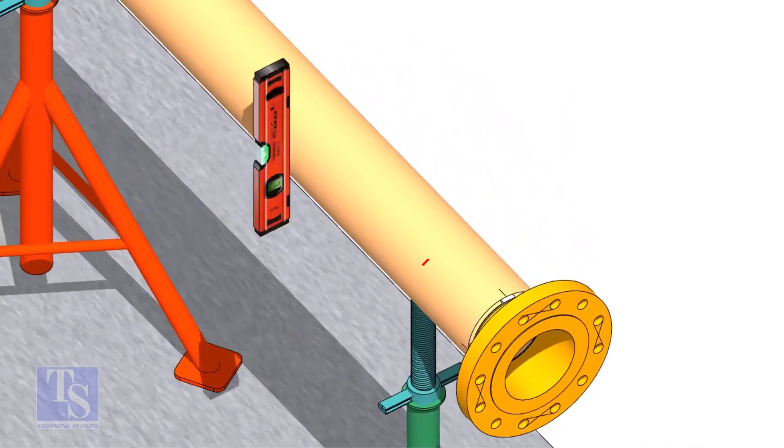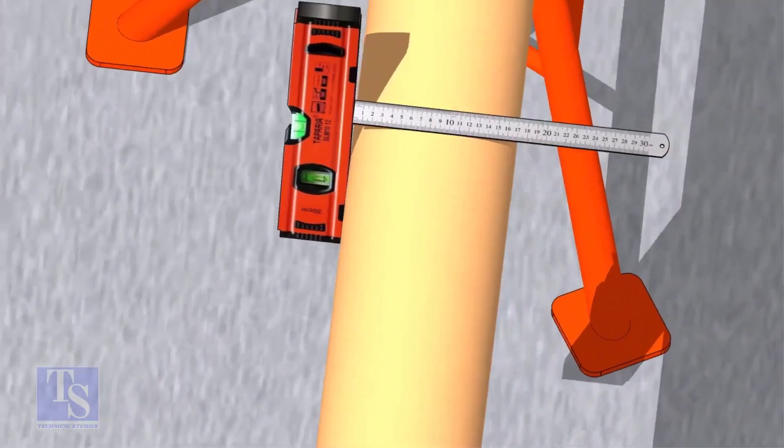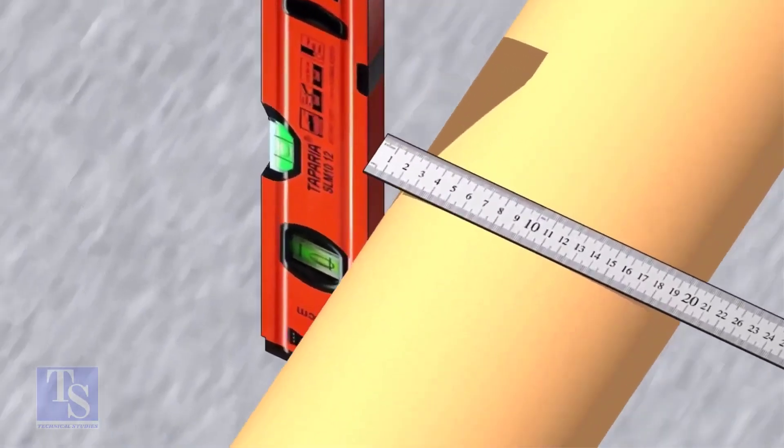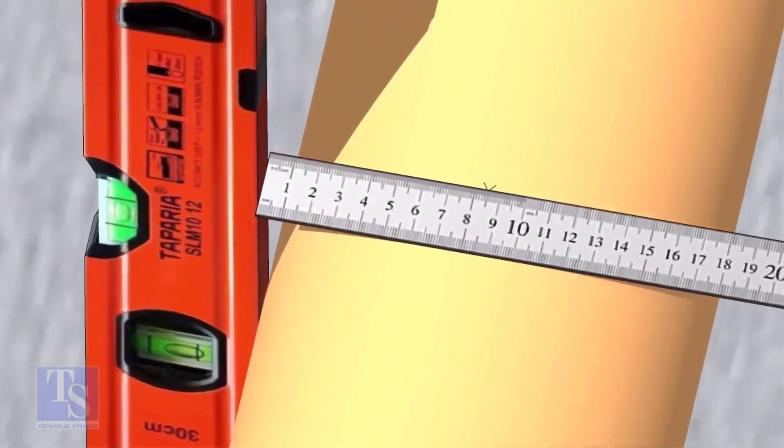Choose a point, roughly 595mm away from the flange face. Mark the center of the pipe. OD of a 6 inch pipe is 168mm, so mark the half OD 84mm as shown.